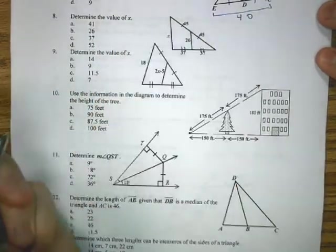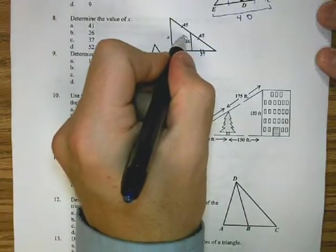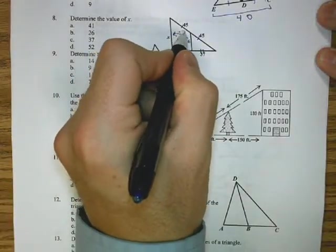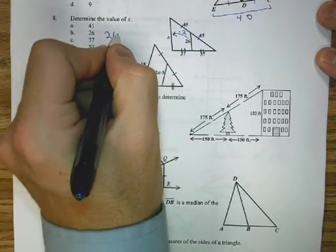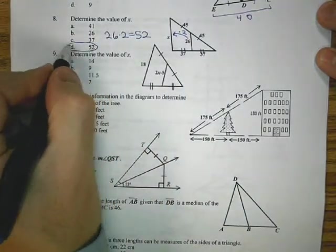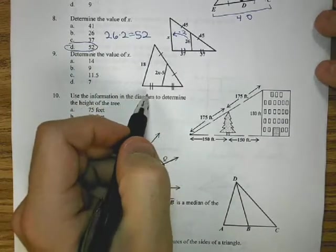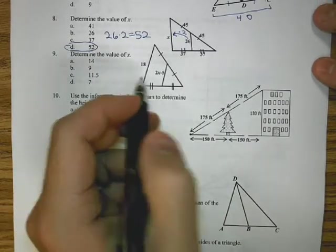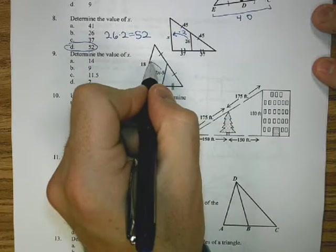Number 8 is another mid-segment problem. I have 45s for those segments, 37s for those segments. So that means the 26, to get to my outer side, I need to multiply it by 2. 26 times 2 is 52, so I get D.